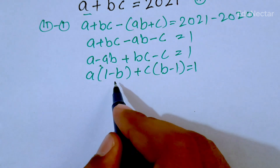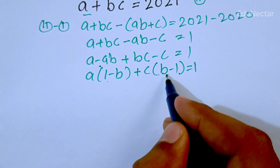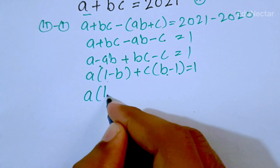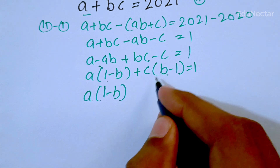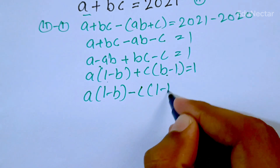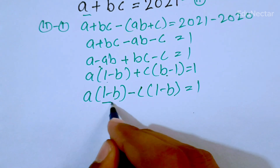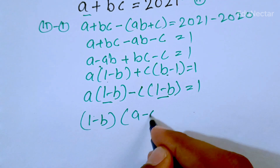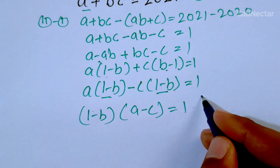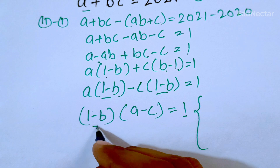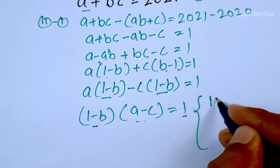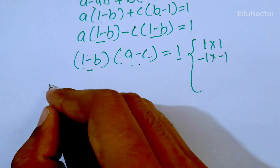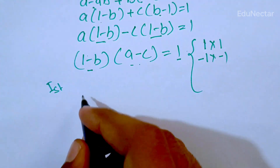We have (1 minus b) and (b minus 1), so I am going to convert b minus one into minus(1 minus b). Multiplying by minus one, it becomes: (1 minus b)(a minus c) is equal to one. Now we have two conditions — the product of two numbers equals one: either (1 minus b) equals one and (a minus c) equals one, or (1 minus b) equals minus one and (a minus c) equals minus one. I am going to solve the first case and then the second case.